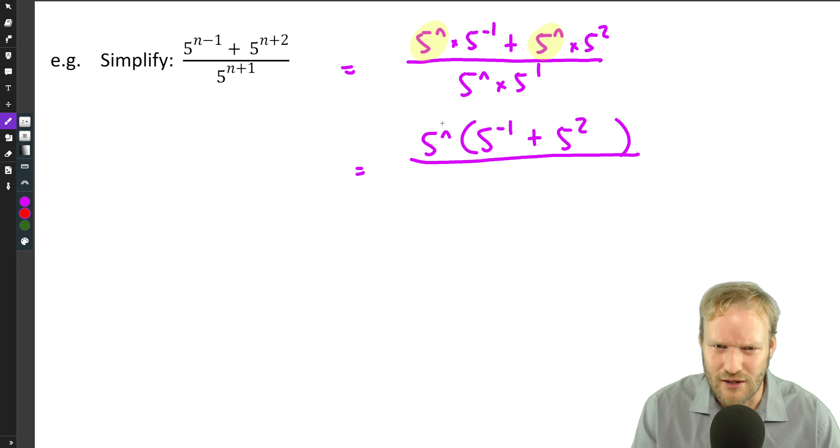So just to check what we're doing there. If we multiply that together, we're just checking, do we get our first term? Well, it looks like it. 5 to the n times 5 to the minus 1 is 5 to the n times 5 to the minus 1. And if we multiply our second term, we've got 5 to the n times 5 squared. Well, that is 5 to the n times 5 squared.